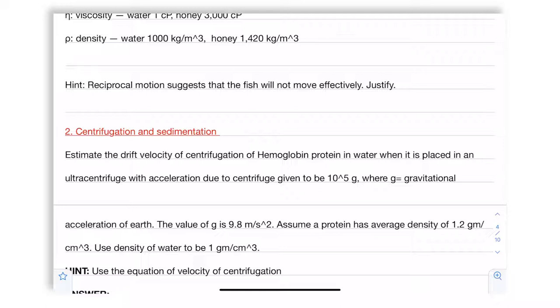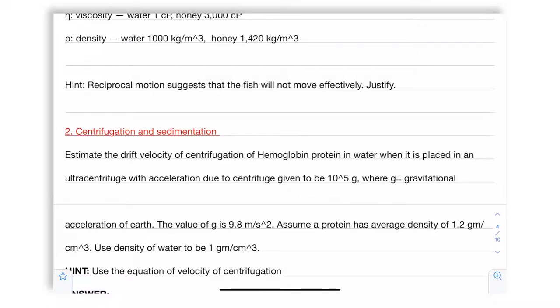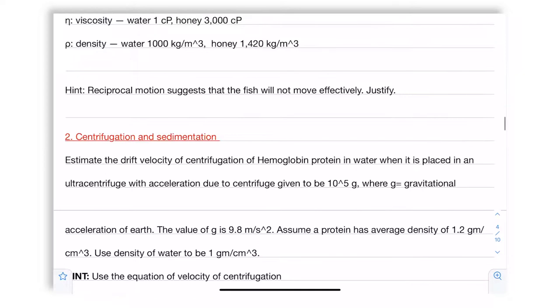Protein has to have some density because you probably recall you will need the density difference between the fluid and the solid that is being centrifuged. And the density of protein is 1.2 grams per cm cube. What is the density of water? 1 gram per cc. So it's 1 gram per centimeter cube. Think about this question. The hint is of course that you need to use the equation of the velocity of centrifugation.